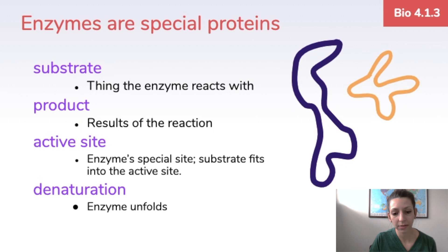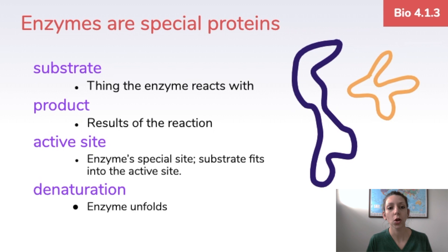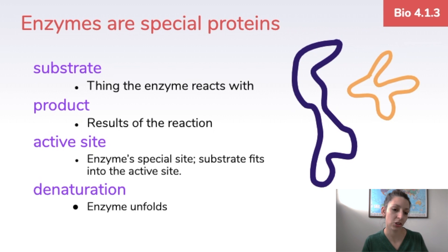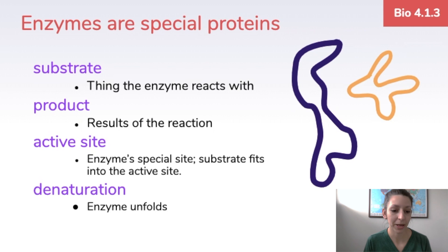We can also have something called denaturation — that's when the enzyme starts to unfold, loses its structure and shape, and can no longer perform its function. This can happen if an enzyme gets too hot, since really high temperatures cause enzymes to denature as those amino acids unfold. Denaturation can also occur at certain pH levels if the enzyme is not suited for that particular environment.